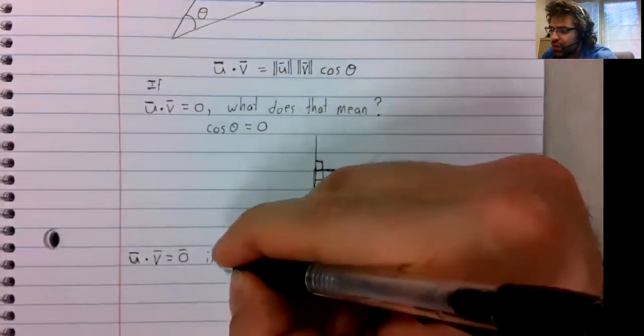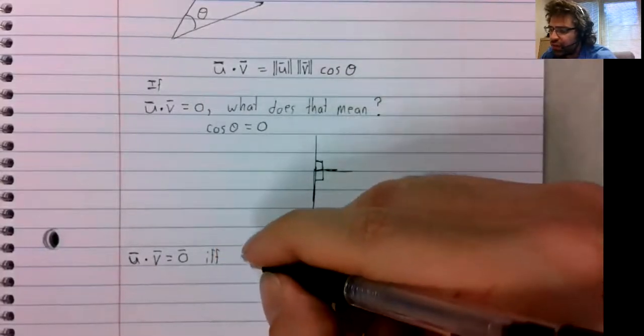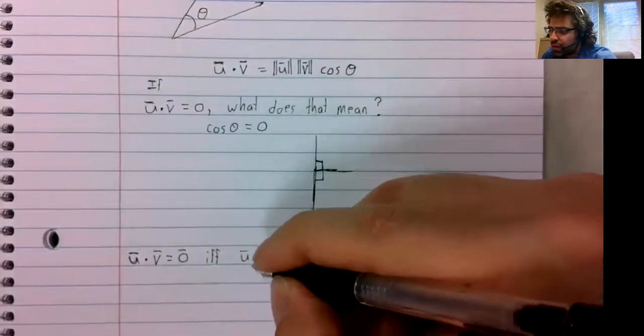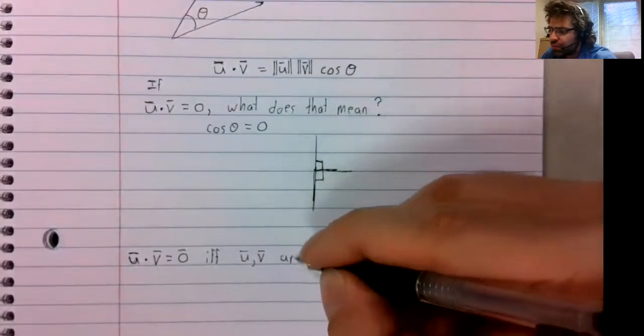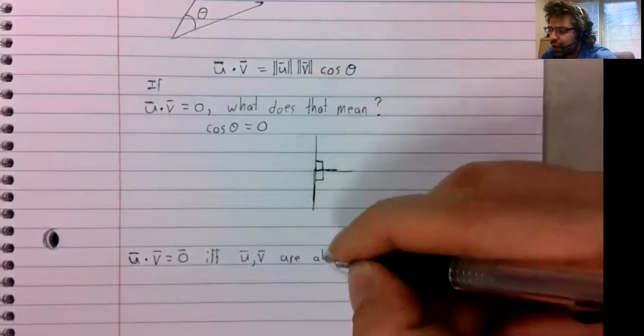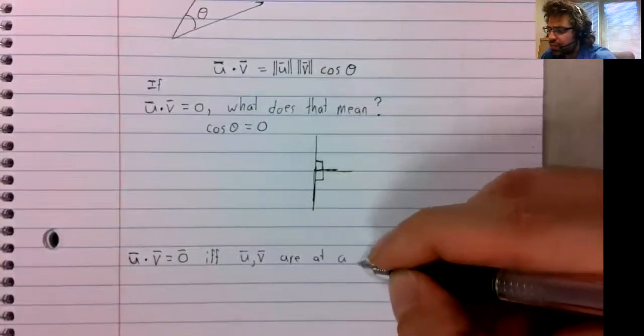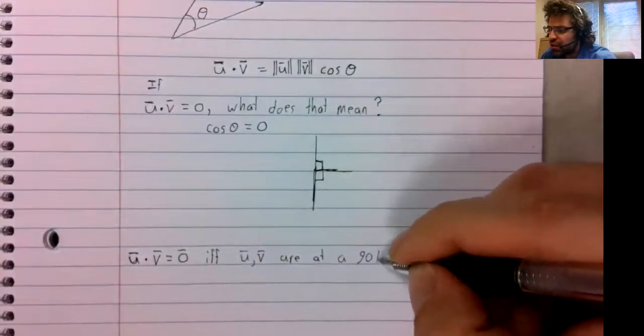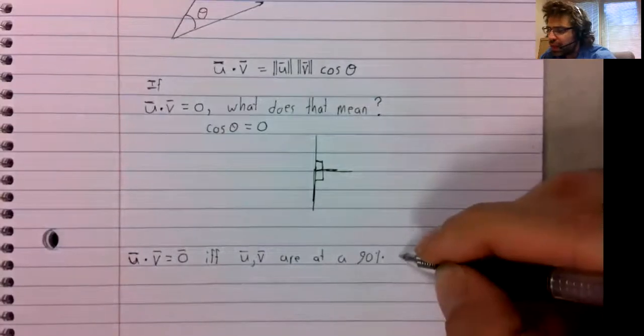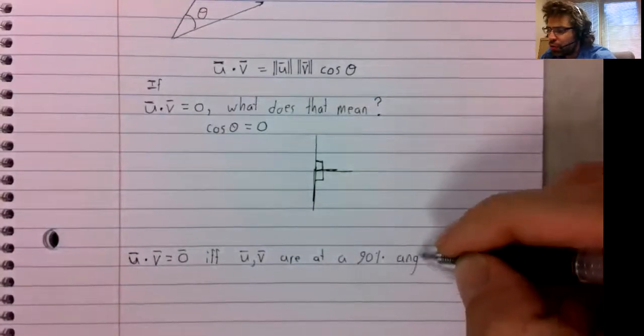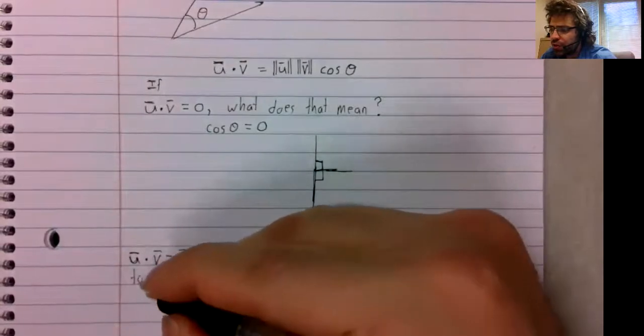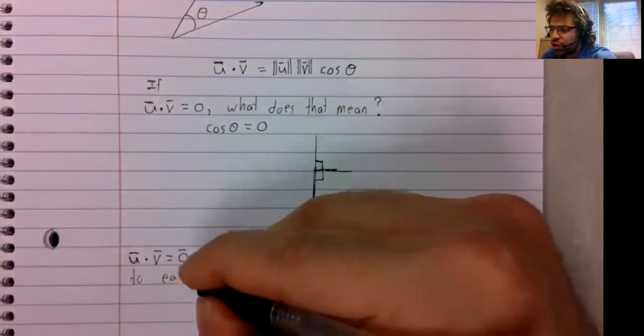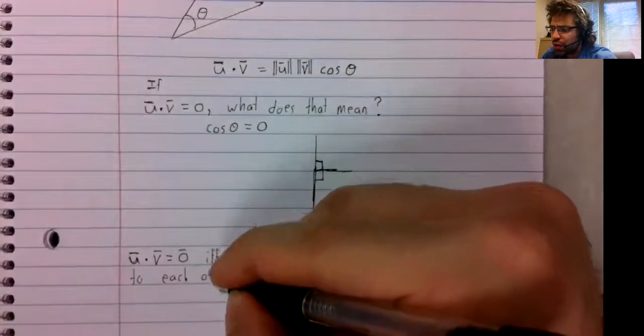A dot product is zero if and only if the vectors are at a 90 degree angle to each other.